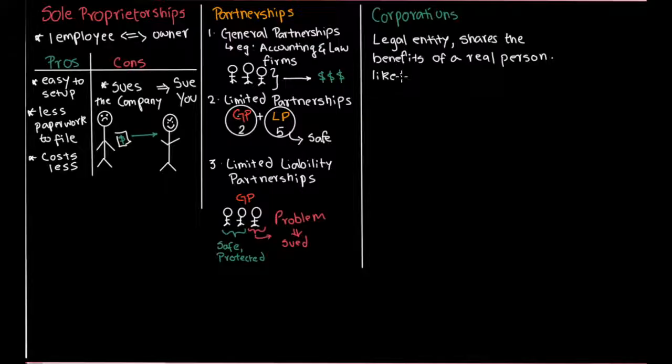So let us write that down. So first, you can enter contracts. Let's say a contract. Any contract you can think of. And secondly, you can get loans. That in itself is a contract you could think of. And you can own assets. So that is what a corporation is.